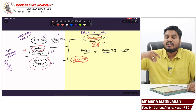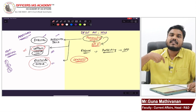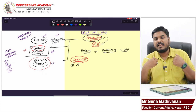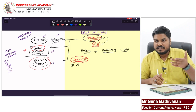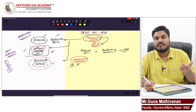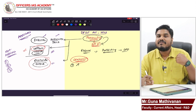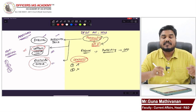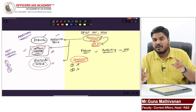Now, consent. If a data fiduciary — a social media handle or any organization — is going to process my data, they have to get my consent. They have to give me a notice first: 'Guna, I'm going to process your data for these purposes, please give me your consent.' Only after I give consent can they do the processing. If I get uncomfortable with the way they are processing my data, I can withdraw my consent in the middle.